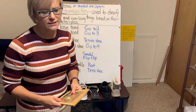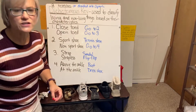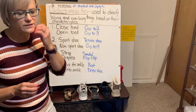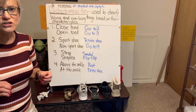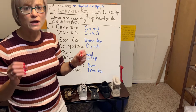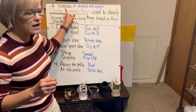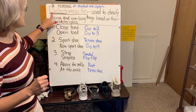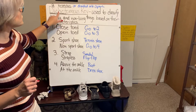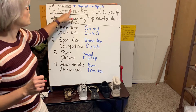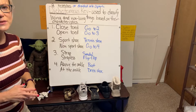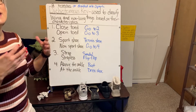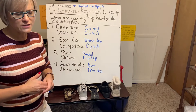A dichotomous key is a classification system used by scientists to group living and non-living things based on the characteristics they share. When we break down the word 'dichotomous' into its Greek parts: 'di' means two, and 'cot' means branches — or we could say divided into two parts. That's going to be important to remember as we classify things using a dichotomous key.